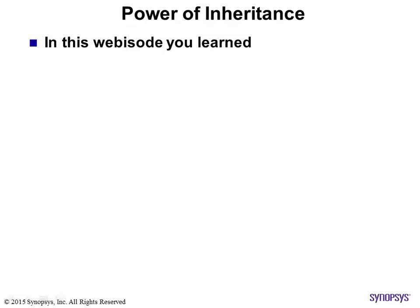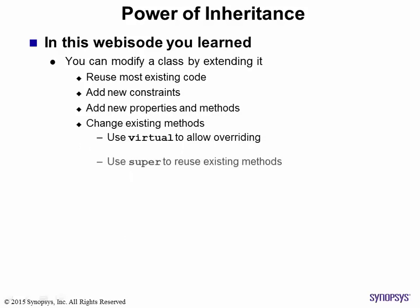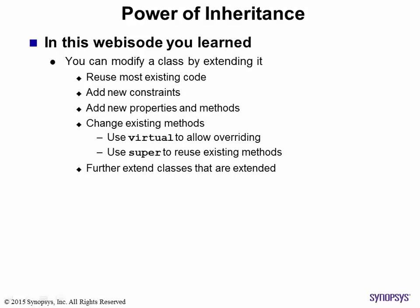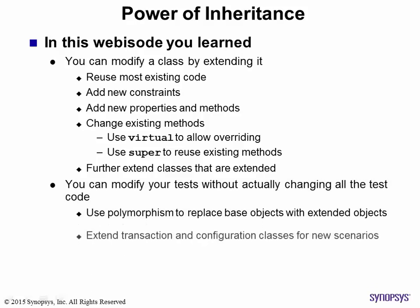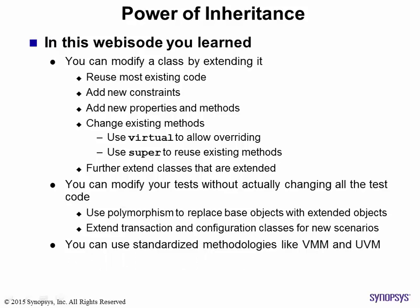One of the goals of using classes is to improve team productivity. Inheritance in OOP allows you to use the full power of OOP — you can reuse an existing class, simply adding to or modifying existing constraints and methods. An extended class can be extended further. Because of polymorphism, you do not need to change existing code to take advantage of modifications to constraints or virtual methods in the base class. Since transactions and configurations are encapsulated inside classes, you can define many test scenarios by extending these classes. All standardized methodologies like VMM and UVM make use of, and work because of, inheritance.